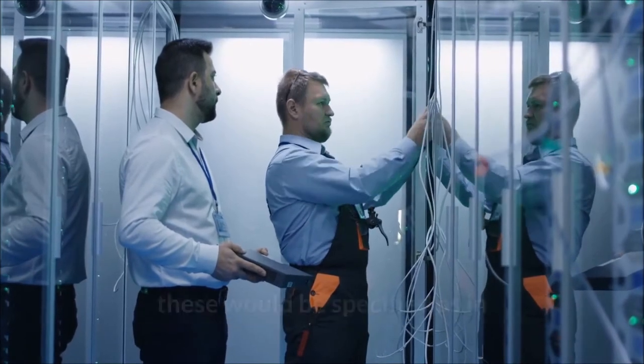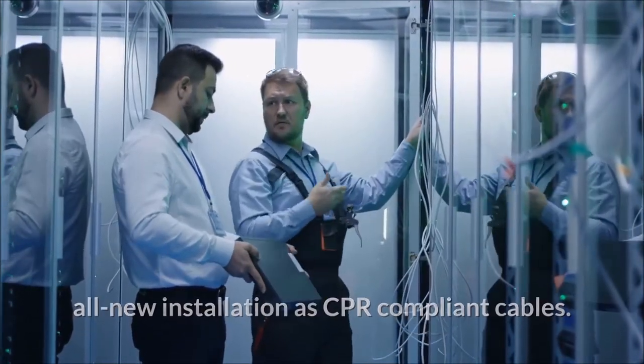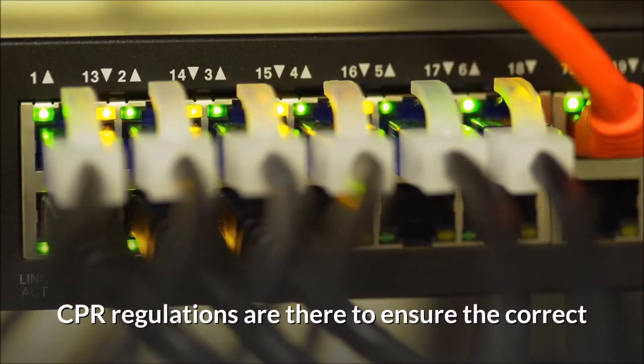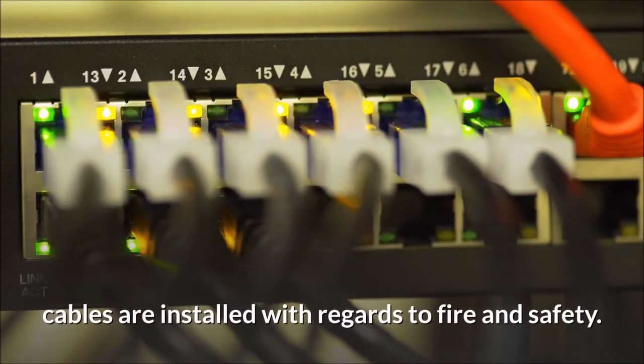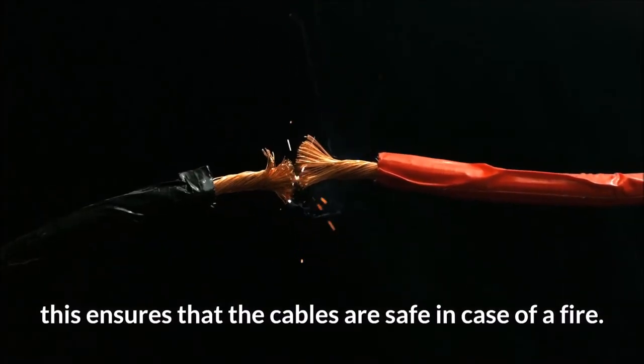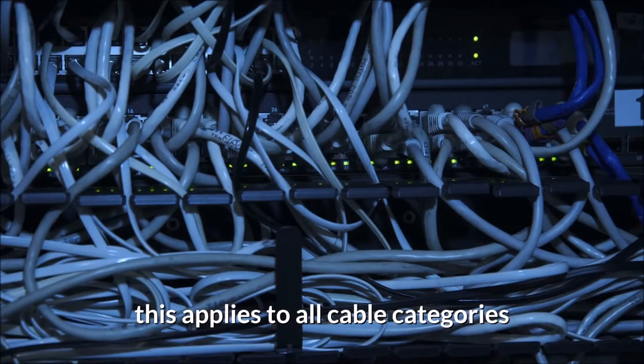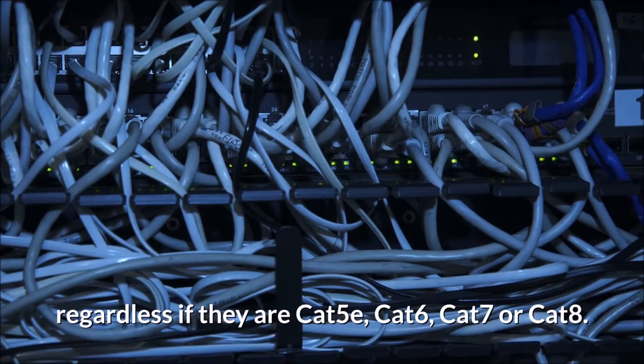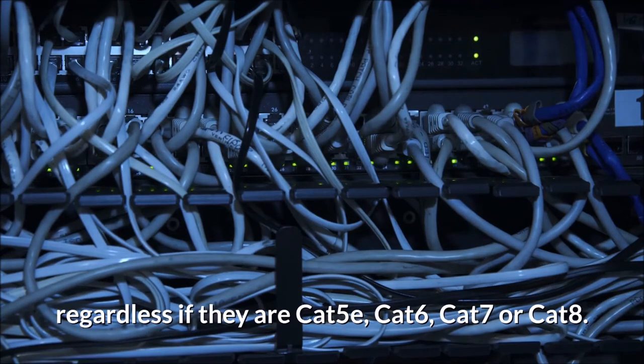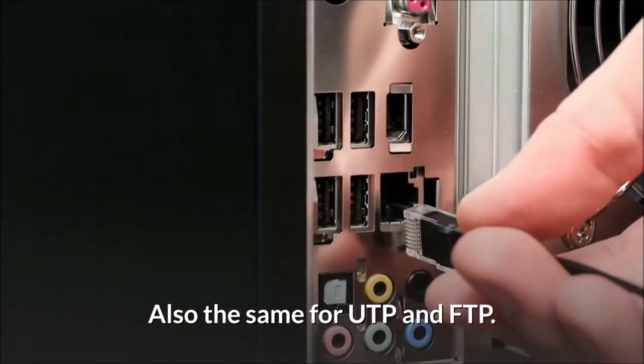These would be specified as in all new installations CPR compliant cables. CPR regulations are there to ensure the correct cables are installed with regards to fire and safety. In addition, this ensures that the cables are safe in case of a fire. Furthermore, this applies to all cable categories regardless if they are Cat 5e, Cat 6, Cat 7 or Cat 8. Also the same for UTP and FTP.